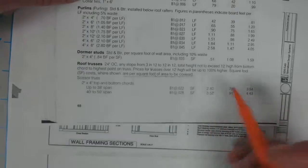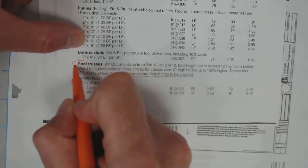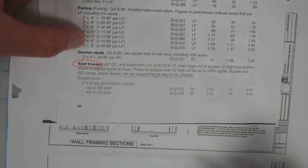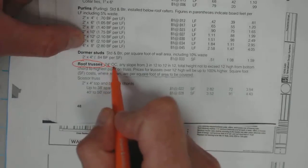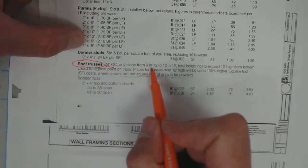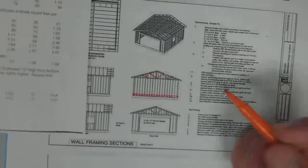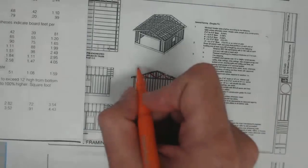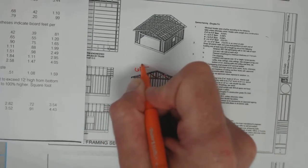What we're going to do is take a look at the textbook for this particular estimate and pull numbers from our roof truss. We're looking at 24 inch on center, any slope from 3/12 to 12/12. This one is not specifically dictated, so we're going to use a 6/12 pitch.